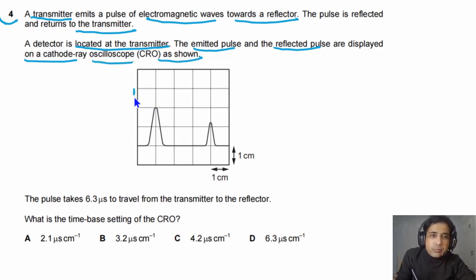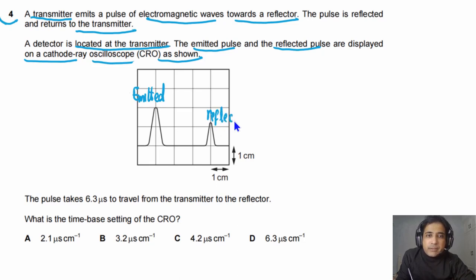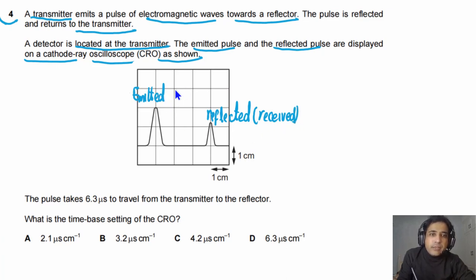So this pulse is the transmitted or emitted pulse, and this one is the reflected pulse — or simply, the received pulse.